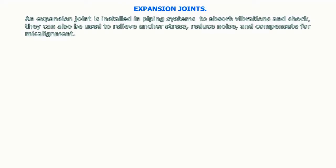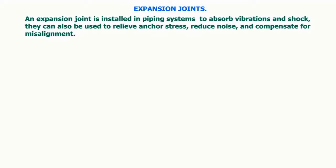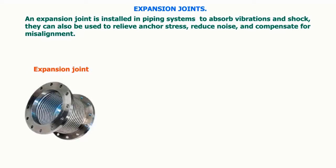An expansion joint is installed in piping systems to absorb vibrations and shock. They can also be used to relieve anchor stress, reduce noise, and compensate for misalignment. The basic use of a steam trap is to discharge condensate, air, and other incondensable gases from a steam system while not permitting the escape of live steam.